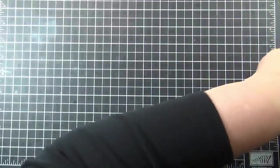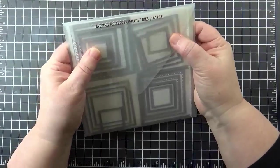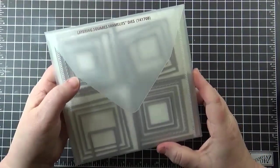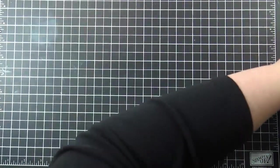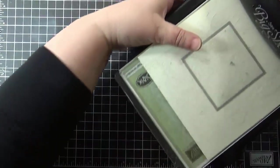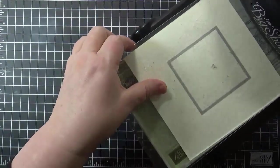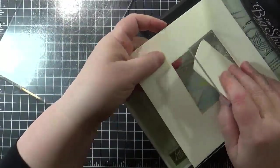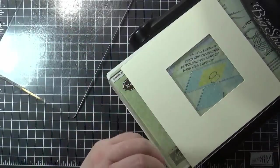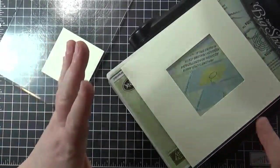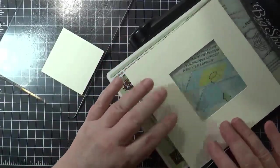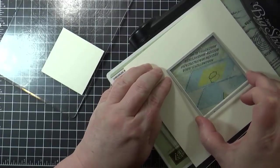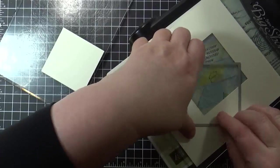Now the dies that I'm going to be using is the Layering Square Framelit Dies and I only need one square. I'm using the largest square which is two and seven-eighths. Now I've already cut the one square out of a six by six piece of Very Vanilla cardstock, but you could use any. The reason this is six by six is because that's the biggest square piece of cardstock that I can put in the Big Shot.